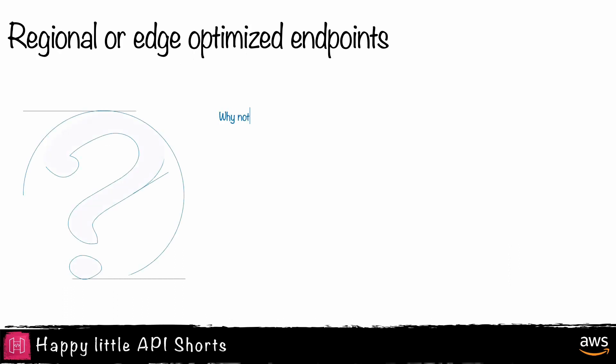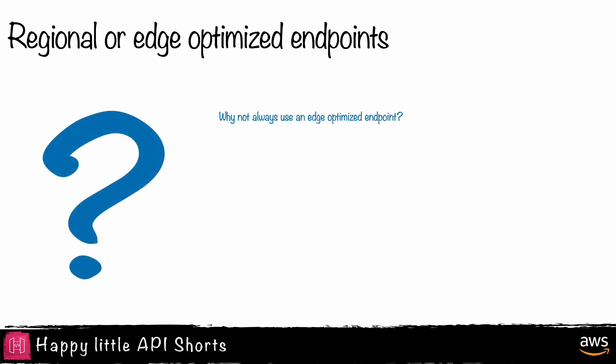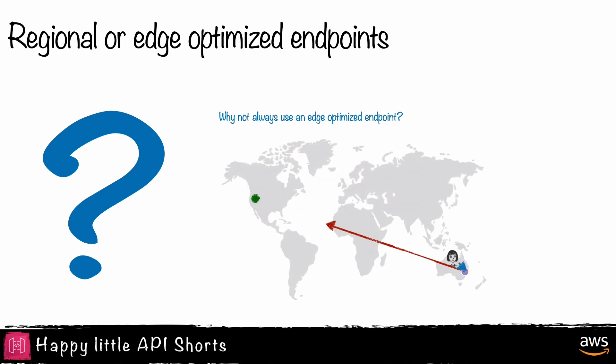You might be asking yourself, what's the catch? Why not always use an edge-optimized endpoint? One reason is if you need caching at the edge. In this scenario, the data is not cached at the edge and every call is routed to the API. If your data is constantly changing, this is acceptable. However, if your data has a long time to live, or TTL, then caching the data as close to your client's location makes more sense. This can be accomplished with AWS CloudFront's edge-based caching. I cover more about caching in a later video in this series.